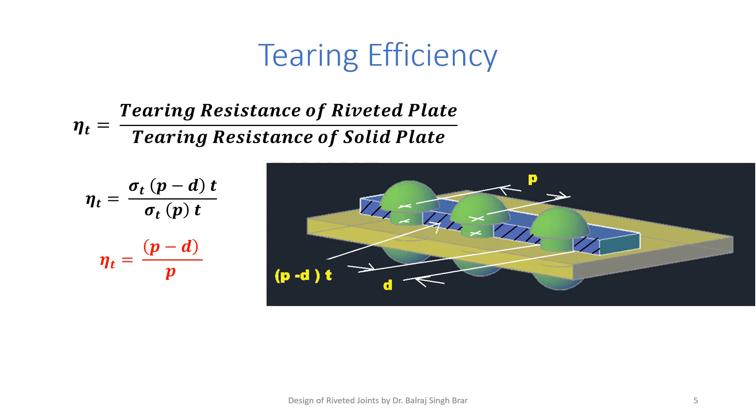Now, once the resistance offered is known, we will calculate the tearing efficiency. Tearing efficiency of riveted plate equals tearing resistance of riveted plate, which is usually measured per unit pitch, divided by tearing resistance of solid plate. Now, as we calculated in the previous slide, tearing resistance of riveted plate is this area where the tearing took place, multiplied by sigma T.